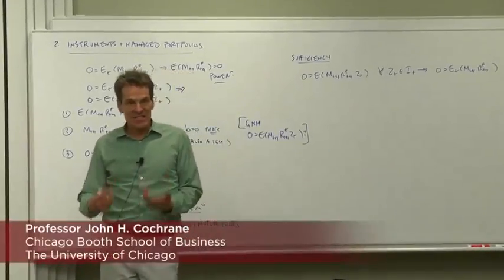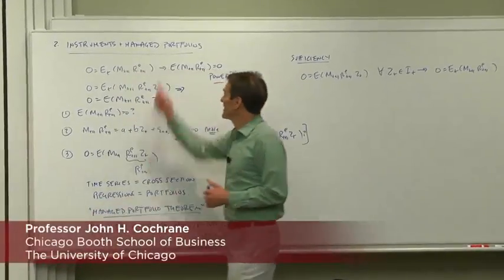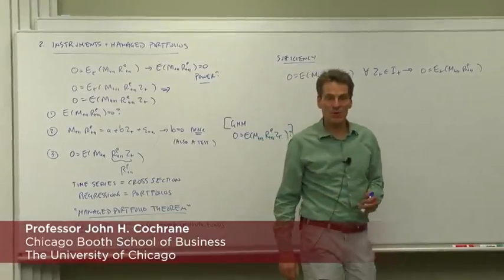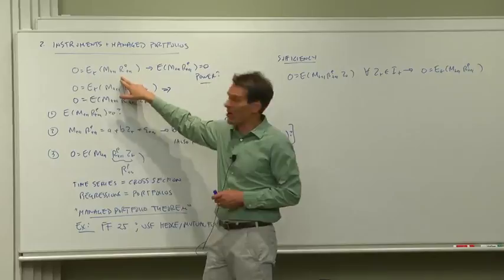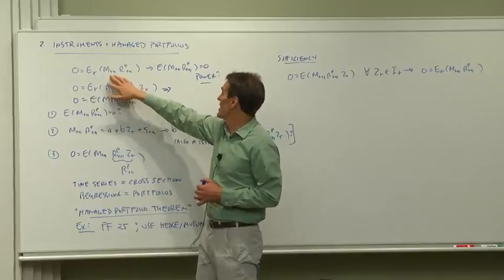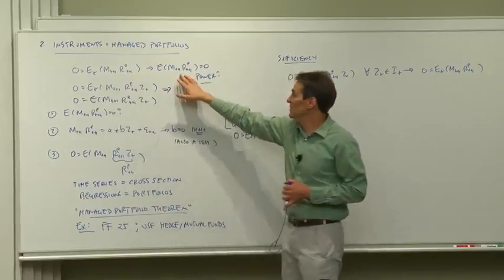So next step in thinking about conditioning information, instruments and managed portfolios. What we did so far is we took 0 equals E(M|R), conditional information on the agent, and we conditioned down to the unconditional mean.